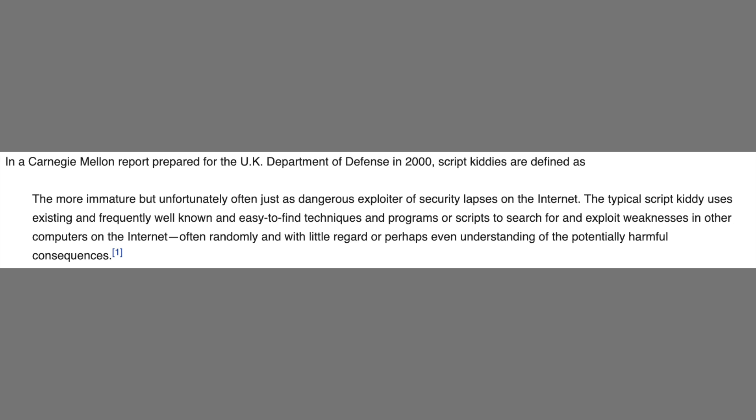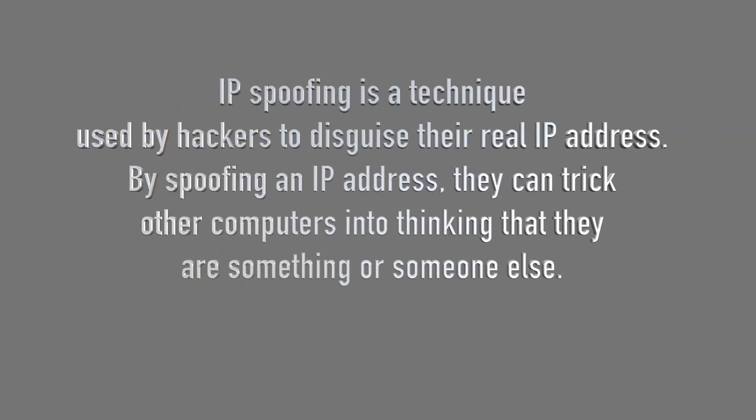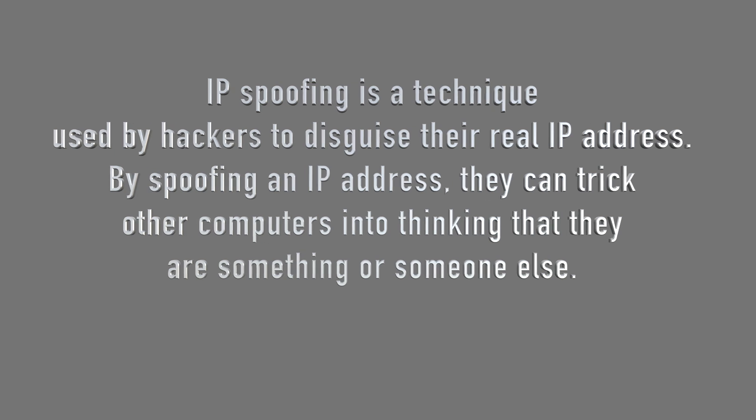The next common network attack is IP spoofing. An IP address is like the home address of your computer. IP spoofing is a hacking technique used to gain unauthorized access to a computer system — hackers disguise their real IP address to trick other computers into thinking they're something they're not, and use it to steal information. It's kind of like lying about your name to get into a party — you spoof your way in. That covers the main gist of network security at a broad, simplified level.